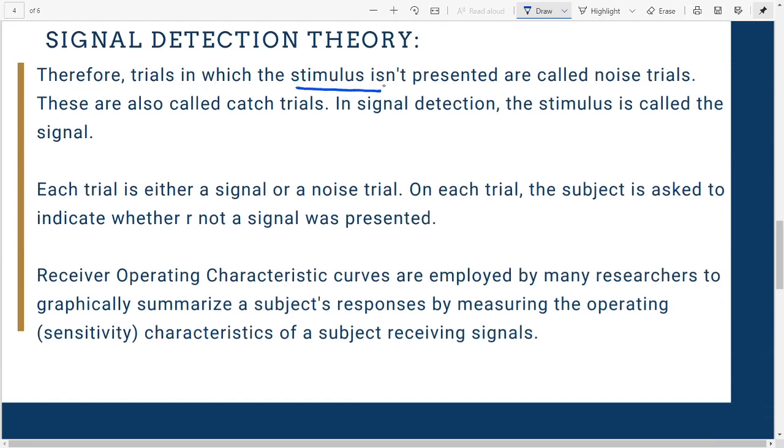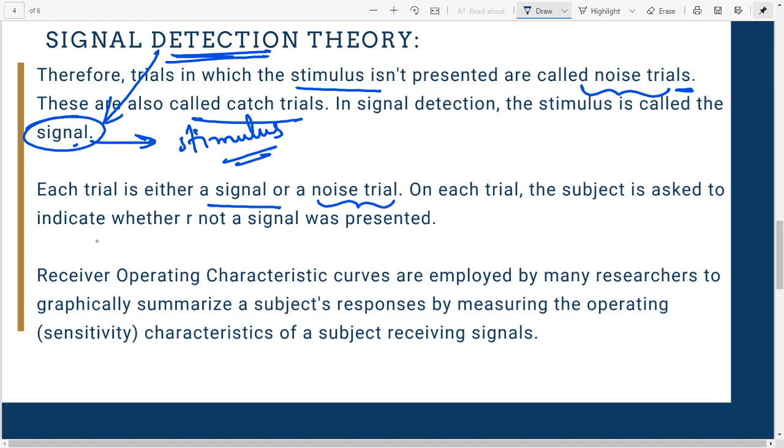Where the stimulus isn't present, they are called noise trials, also called catch trials because this is where you catch people making a mistake. The stimulus is called the signal and that is what you're trying to detect. Each trial is either a signal or a noise trial. The subject is asked to indicate whether or not a signal has been presented.